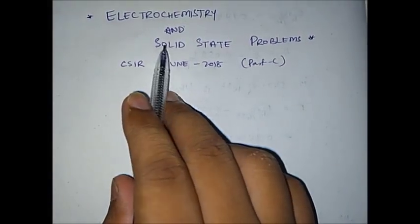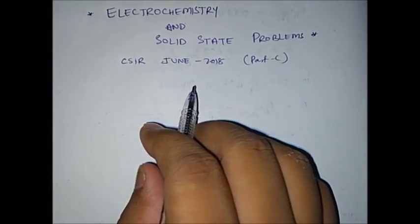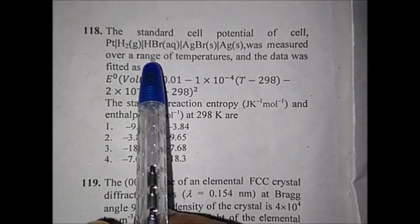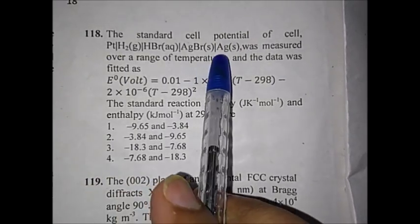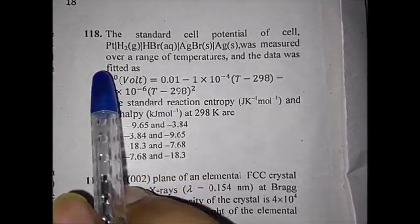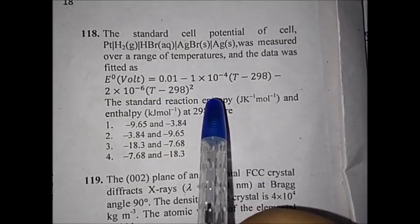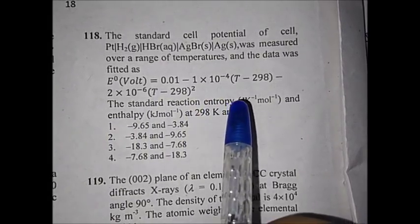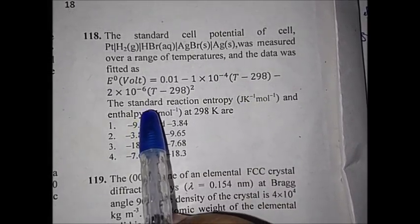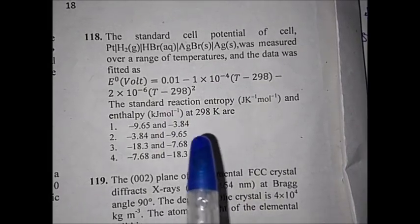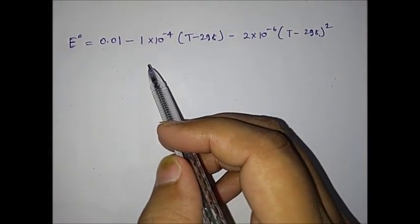So let's start with the video. The first question is from the electrochemistry part. The question says that the standard cell potential of a given cell was measured over a range of temperatures and the data was fitted as an equation for E°. They have asked you to calculate the standard reaction entropy in joule per kelvin per mole, and the standard enthalpy in kilojoule per mole at 298 K.